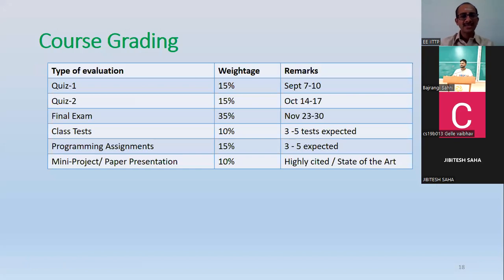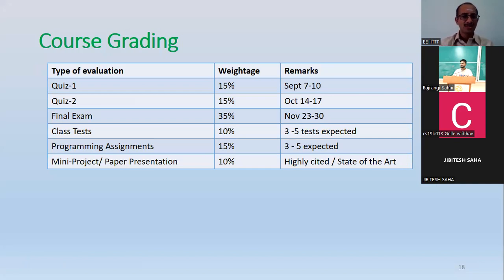This is the evaluation criteria: assignments are 15 percent each, final exam is 35 percent — usually 40 percent is needed in the final exam. Given that it's a reasonably programming-intensive course, I have put more percentage toward programming assignments and mini projects. Class tests will be for 10 percent, and they will be fill-in-the-blanks or objective Moodle tests.